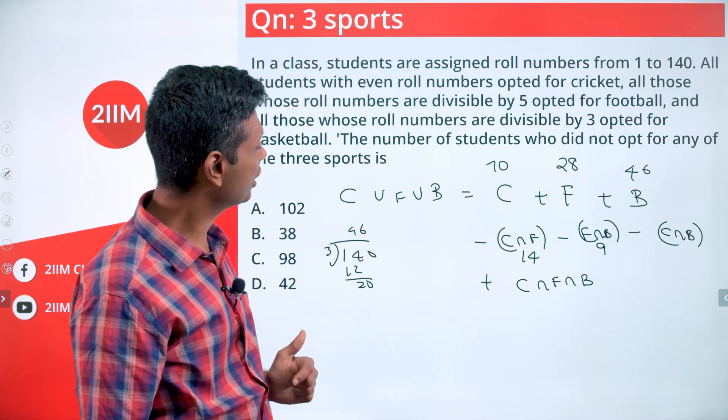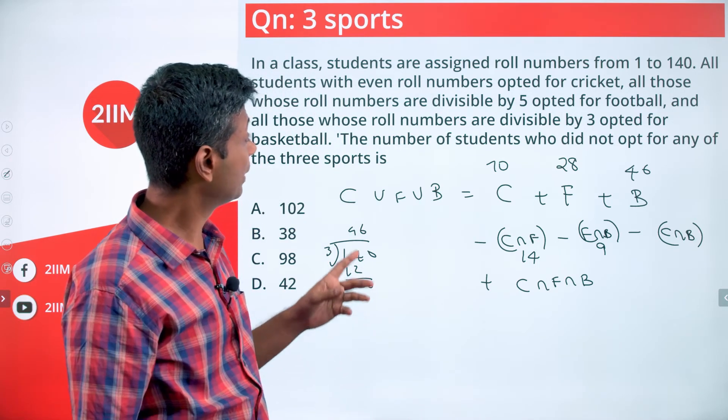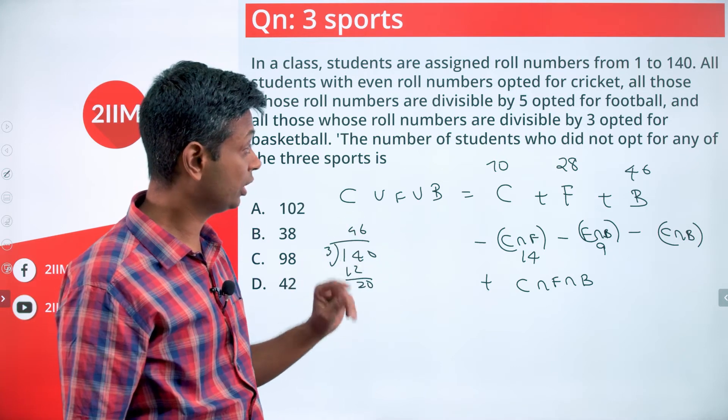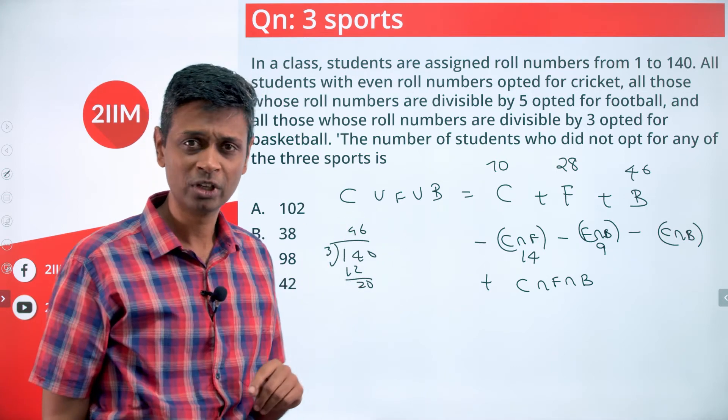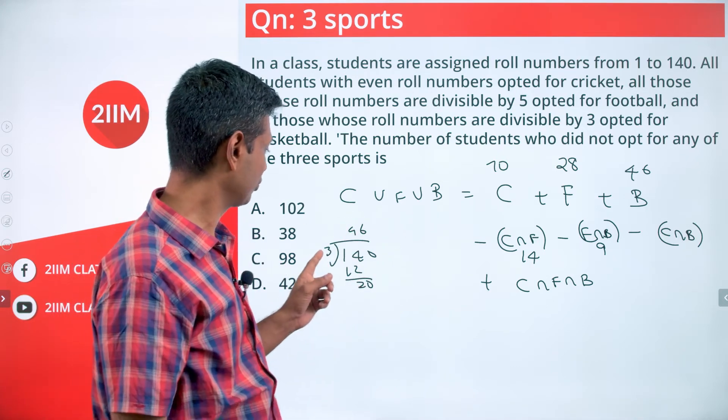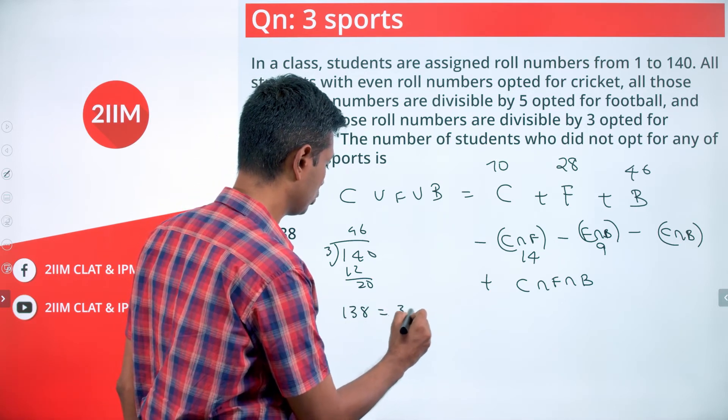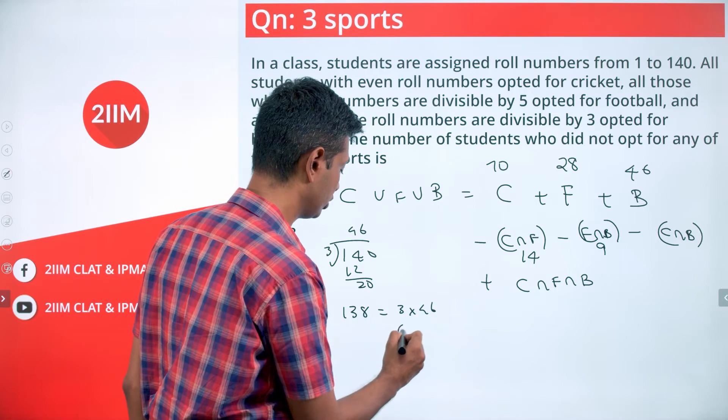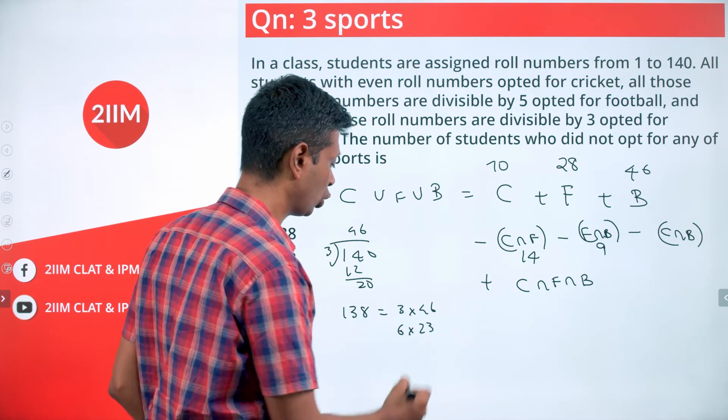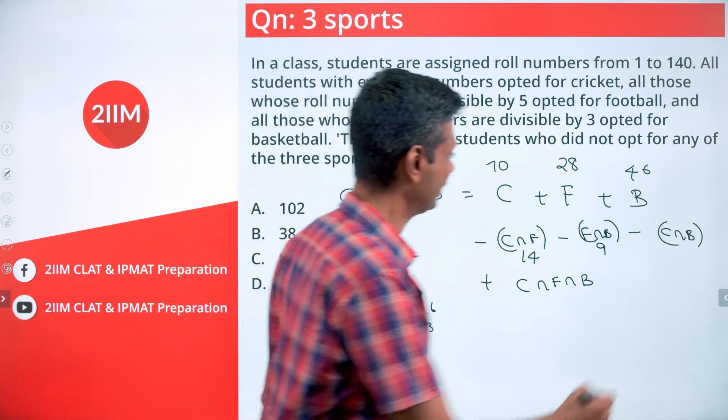Cricket intersection basketball: multiples of 2 and multiples of 3, which are multiples of 6. How many multiples of 6 are there? Since 138 = 6×23, there are 23 multiples of 6.